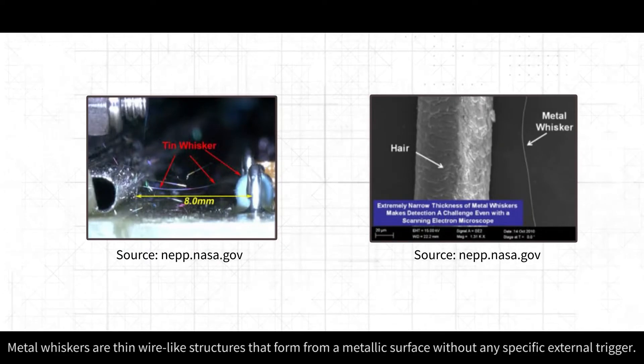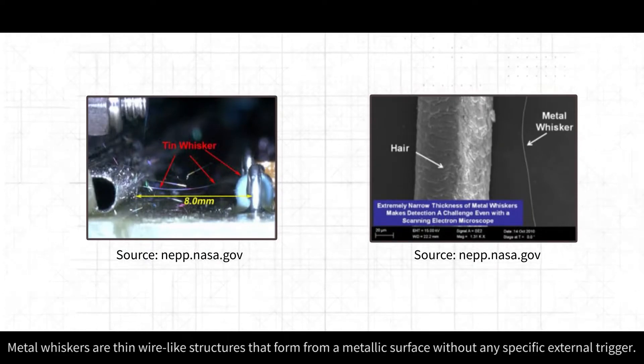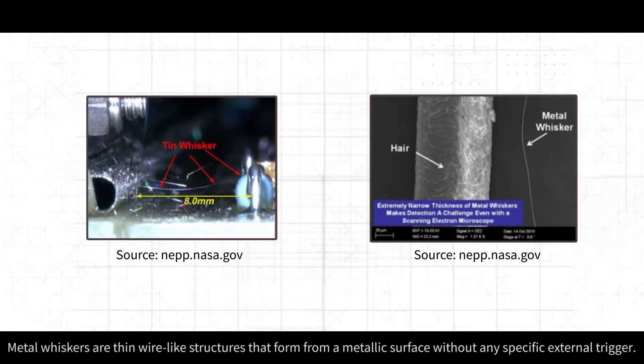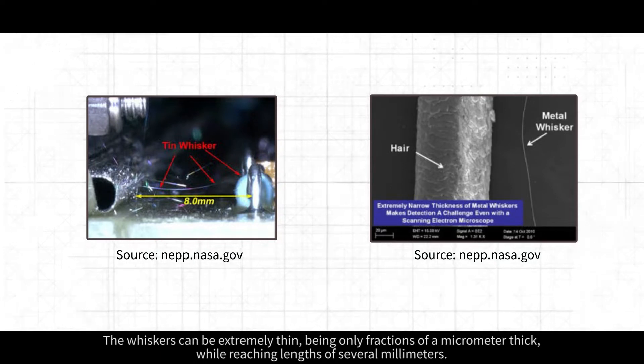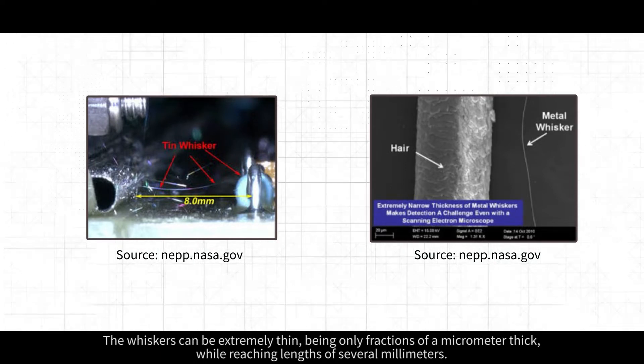Metal whiskers are thin wire-like structures that form from a metallic surface without any specific external trigger. The whiskers can be extremely thin, being only fractions of a micrometer thick.